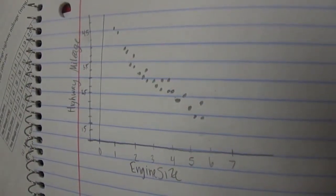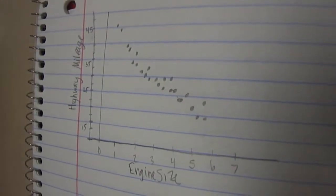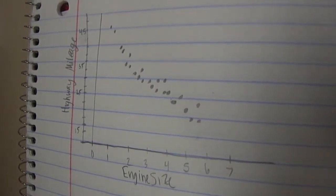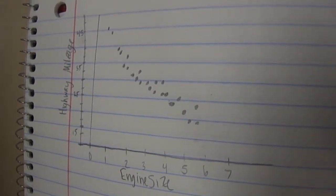Here's a rough scatter plot of the data. The data follows a curved pattern, so a linear model is not appropriate. Furthermore, the residual plot shows a distinct pattern.